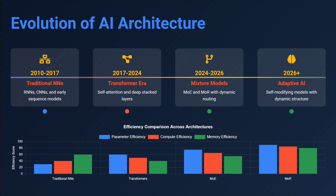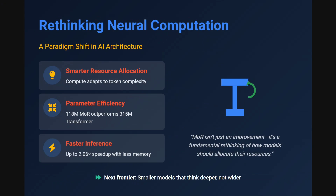Looking at the evolution of AI architectures: from 2010 to 2017 it was traditional neural networks; 2017 to 2024 it's transformers; 2024 to 2026 it's Mixture of Experts; and 2026 onwards, adaptive AI is coming in. This represents a paradigm shift in AI architectures — the limits of transformers are now being exposed, and MoR is helping address that with smarter resource allocation. A 118 million parameter MoR model outperforms a 315 million parameter transformer, with faster inferencing as well.